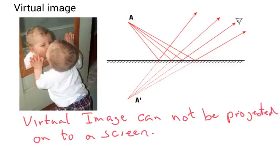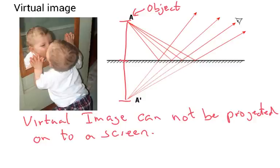The distance from the object to the mirror is equal to the distance from the image to the mirror. So this is your object here and this is your image — the distance on one side is the same as the distance on the other side.